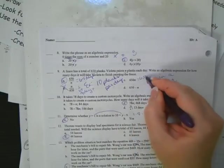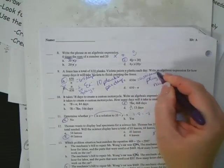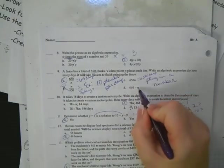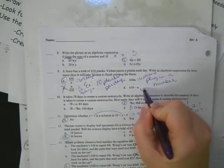Alright, number ten. It takes 78 days for one motorcycle. So how many for two or how many for three or how many for ten or how many for six, like this question is asking. I'm just going to multiply. So your answer is C.